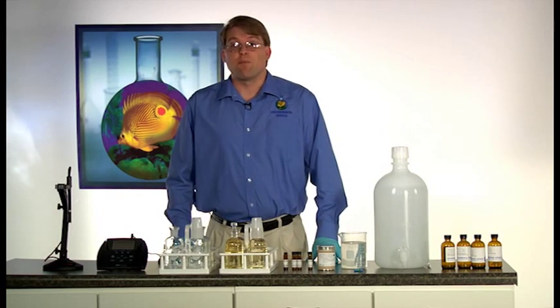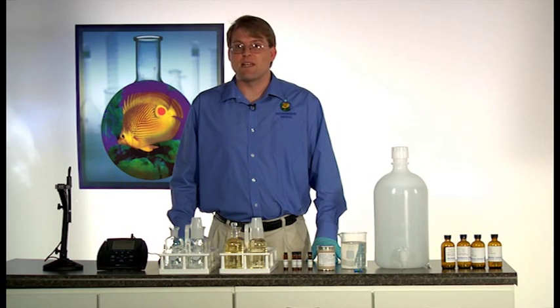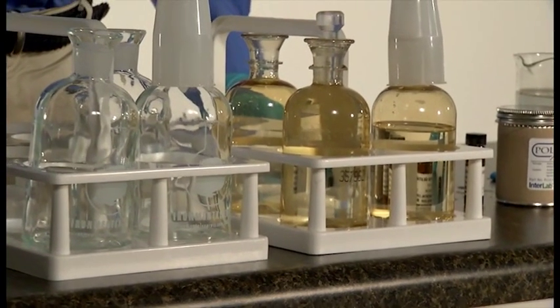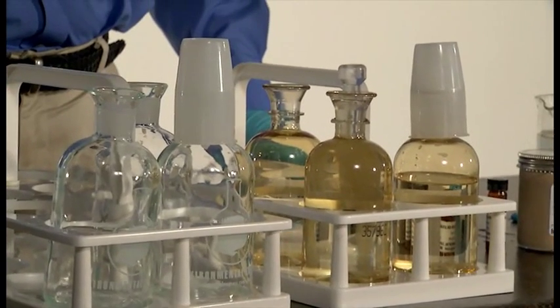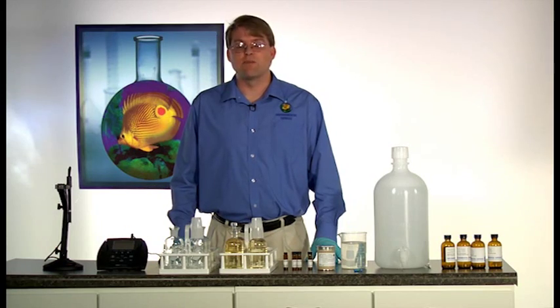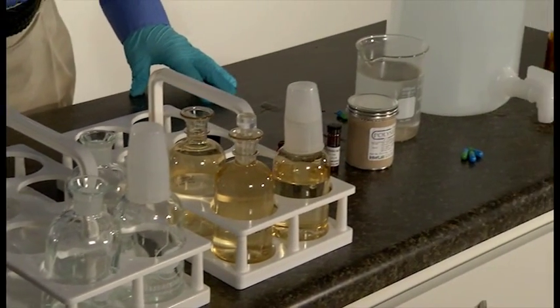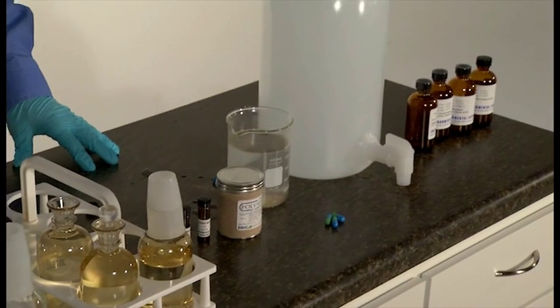Each sample needs to be checked for the proper pH range and the presence of chlorine. If the sample is outside of the acceptable pH range, it needs to be adjusted with dilute solutions of sulfuric acid or sodium hydroxide. Chlorine, if present, needs to be neutralized with sodium sulfite. Each sample needs to have several dilutions prepared to ensure an appropriate BOD value.